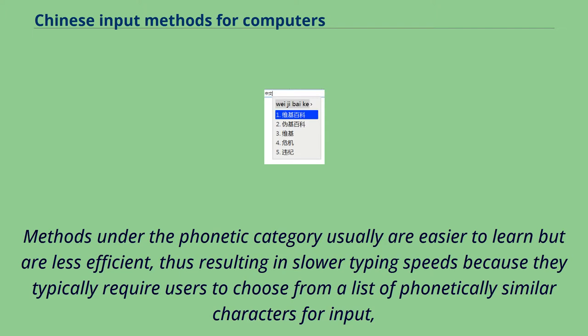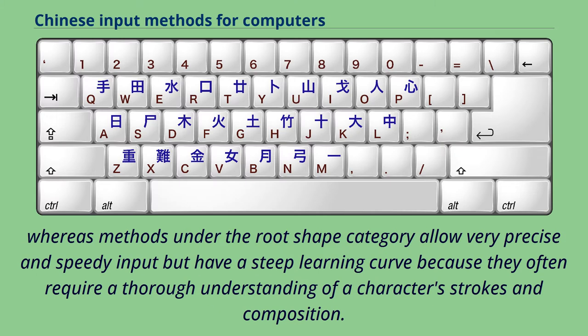Methods under the phonetic category are usually easier to learn but are less efficient, resulting in slower typing speeds because they typically require users to choose from a list of phonetically similar characters for input. Whereas methods under the root shape category allow very precise and speedy input but have a steep learning curve, because they often require a thorough understanding of a character's strokes and composition.